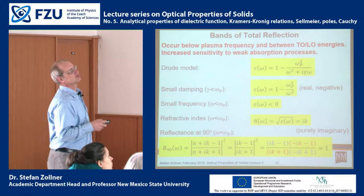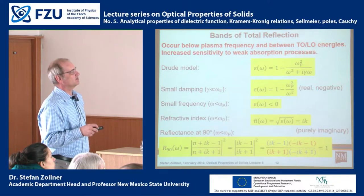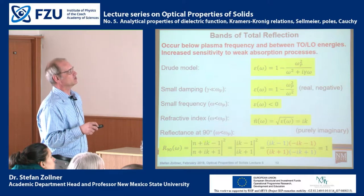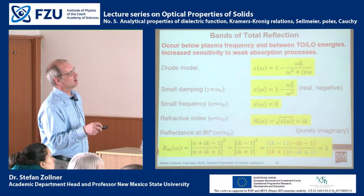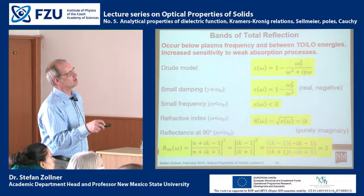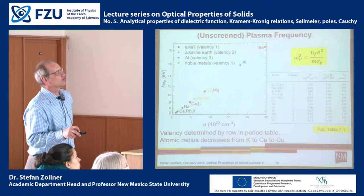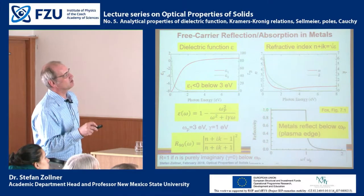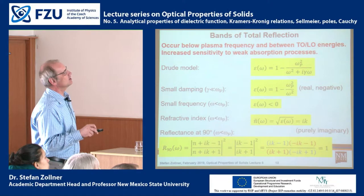Below the plasma frequency, epsilon is real and negative. The refractive index is the square root of epsilon, so the complex refractive index is purely imaginary — the real part N is zero. We calculate reflectance as |N−1|²/|N+1|². With N equal to zero, the blue terms cancel giving minus one, and the red terms also cancel giving minus one. Minus one times minus one equals plus one — so the reflectivity of a good metal is exactly one below the plasma frequency.